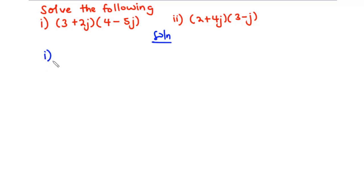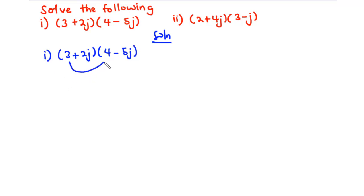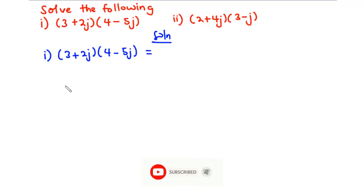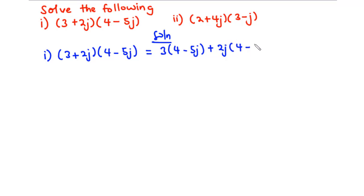For part (i) we have (3 + 2j) multiplied by (4 - 5j). To multiply these two complex numbers, we pick 3 and multiply it across 4 and then -5j. Next we pick 2j and also multiply across 4 and then -5j. So that becomes 3(4 - 5j) plus 2j(4 - 5j).